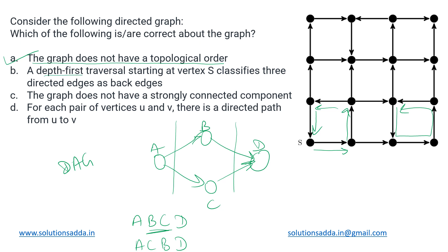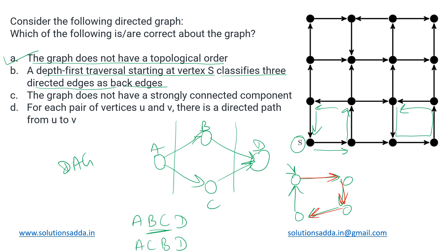Next, option B says that depth-first traversal starting at vertex s classifies three directed edges as back edges. When we do a DFS traversal, we encounter nodes that lead back to their ancestors. For example, consider four nodes forming a cycle — if I start DFS at one node, I traverse around, and the final edge leads back to the start node, which is its ancestor.